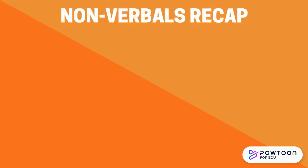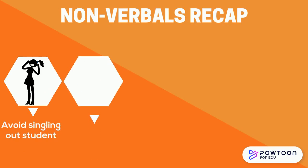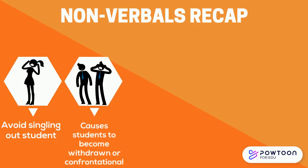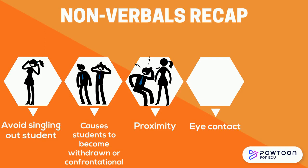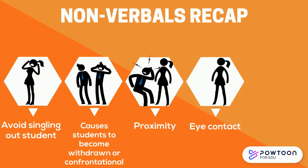Let's recap. In today's classroom management microlecture, we learned about the importance of nonverbals. Singling out students in front of their peers can cause them to withdraw or become confrontational. To avoid this, use nonverbals. Today we talked about two nonverbal strategies: proximity and eye contact. Proximity involves moving physically closer to students so that your physical presence can redirect off-task or misbehavior. To make proximity more effective, use it throughout your entire lesson by moving around the room. Also use eye contact — a stern look can redirect behavior whether you're next to the student or across the room. To maximize eye contact, don't have your back to the students and always make sure to be facing the class.